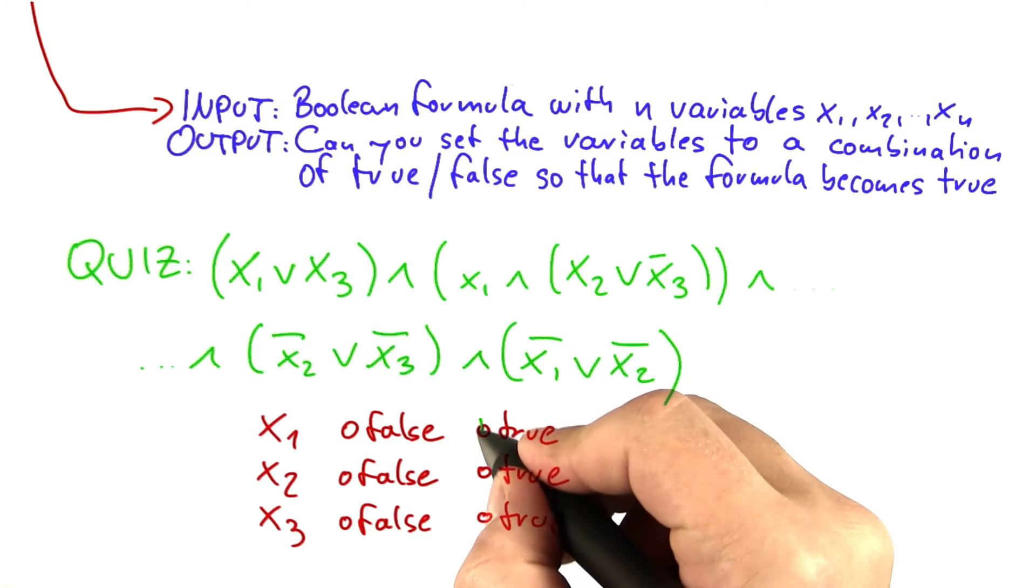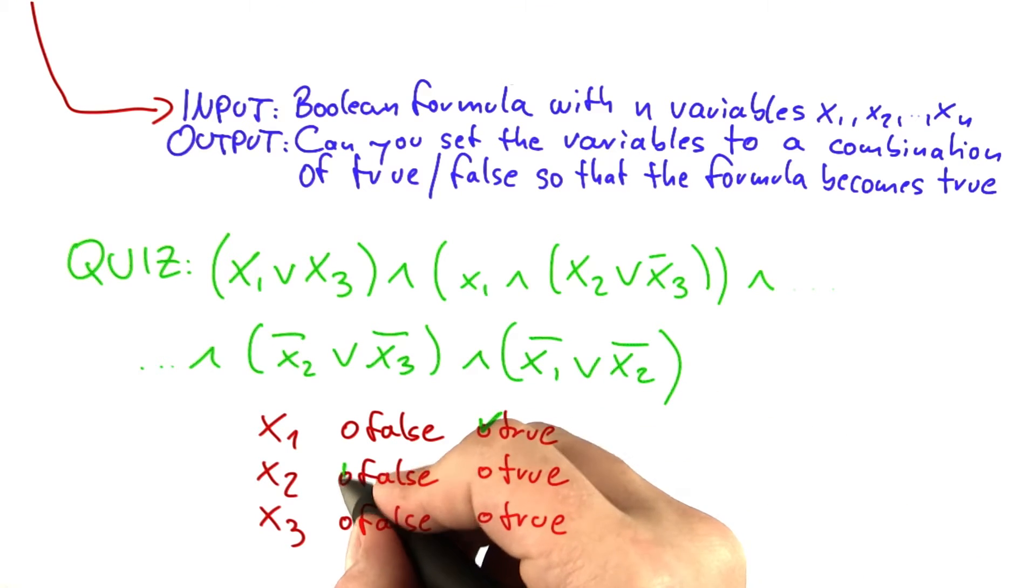And the answer here is that you should set x1 to true, x2 to false, and x3 to false.